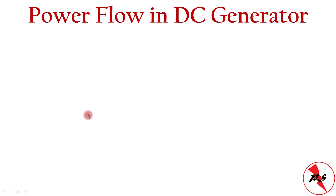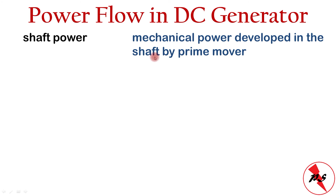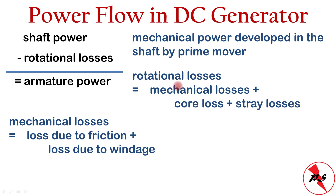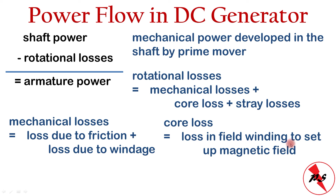The power flow in a DC generator begins with shaft power — the mechanical power developed in the shaft by the prime mover. From this, rotational losses are subtracted to give armature power. Rotational losses are a combination of mechanical losses (friction and windage), core loss, and stray losses — all of which are constant in nature.